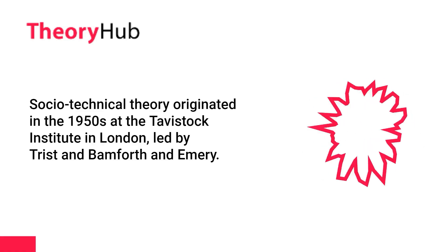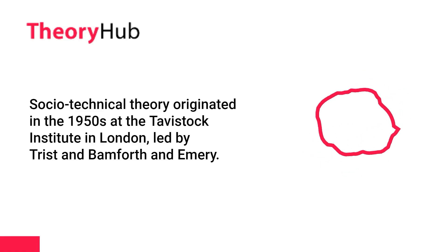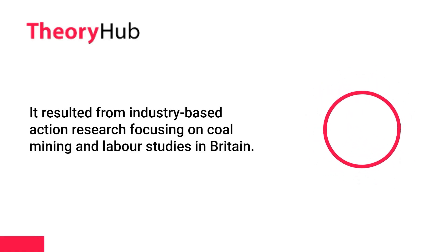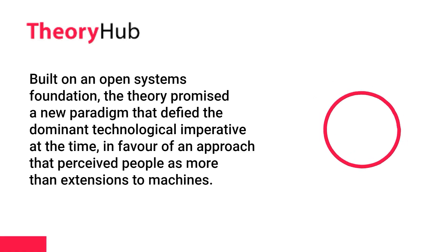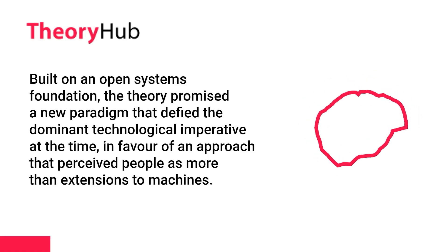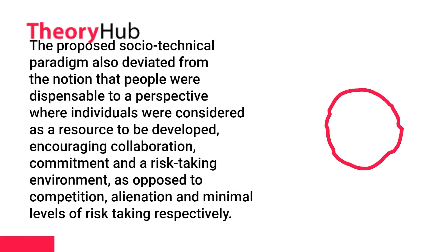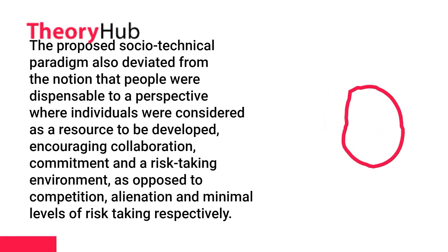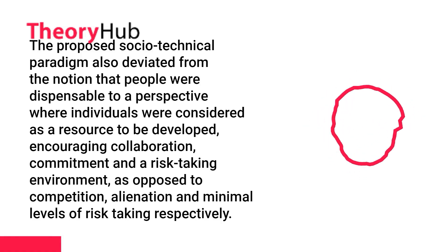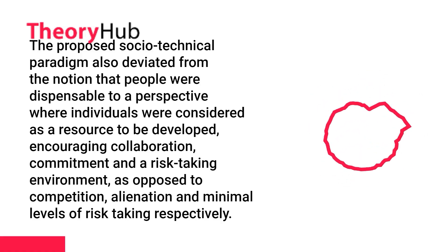Socio-technical theory originated in the 1950s at the Tavistock Institute in London, led by Trist, Bamforth and Emery. It resulted from industry-based action research focusing on coal mining and labor studies in Britain. Built on an open systems foundation, the theory promised a new paradigm that defied the dominant technological imperative, in favor of an approach that perceived people as more than extensions to machines. The proposed socio-technical paradigm also deviated from the notion that people were dispensable, to a perspective where individuals were considered a resource to be developed, encouraging collaboration, commitment and a risk-taking environment, as opposed to competition, alienation and minimal levels of risk-taking.